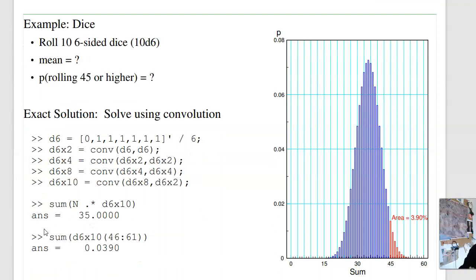As an example, suppose I want to roll ten six-sided dice. If I want to find the mean or the probability of rolling 45 or higher, there's a couple ways we can do that. One way is to use convolution — find the PDF for rolling a six-sided die, convolve it to get 2d6, then 4d6, 8d6, and 10d6. The average of rolling ten six-sided dice is 35, and the probability of rolling 45 or higher is 3.9%.